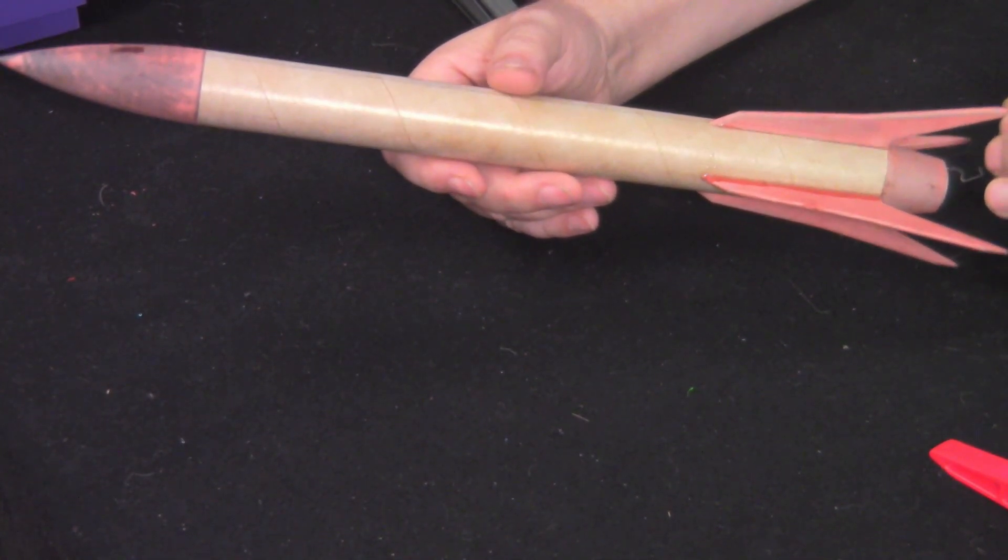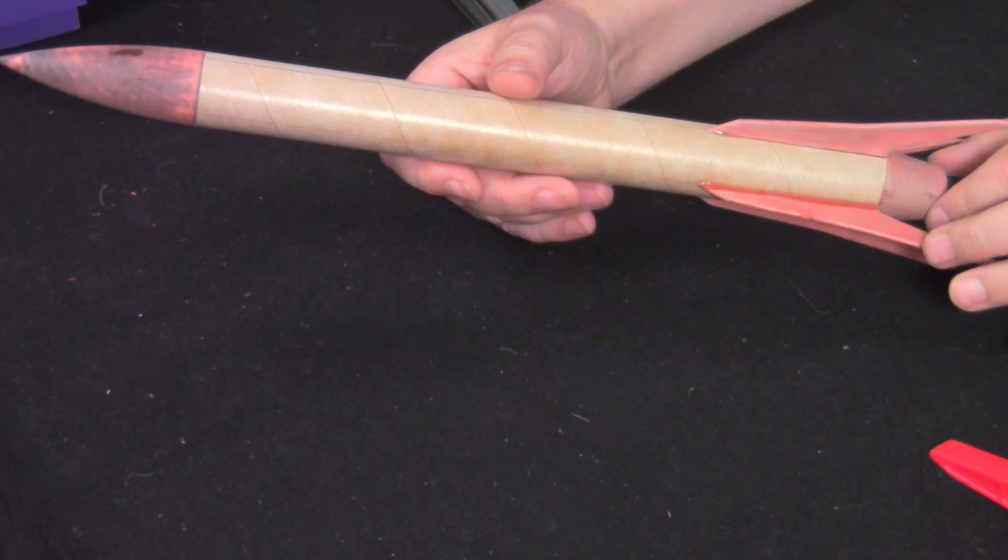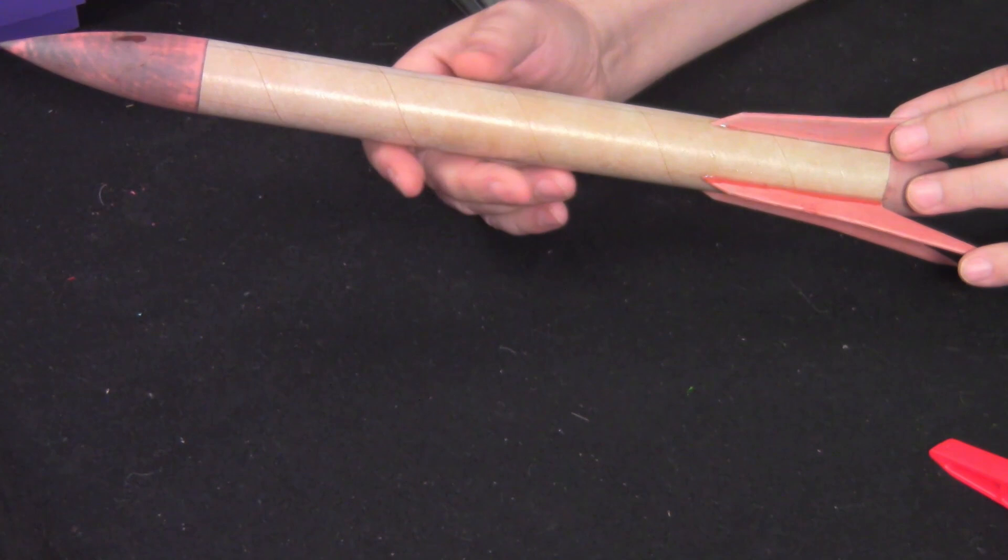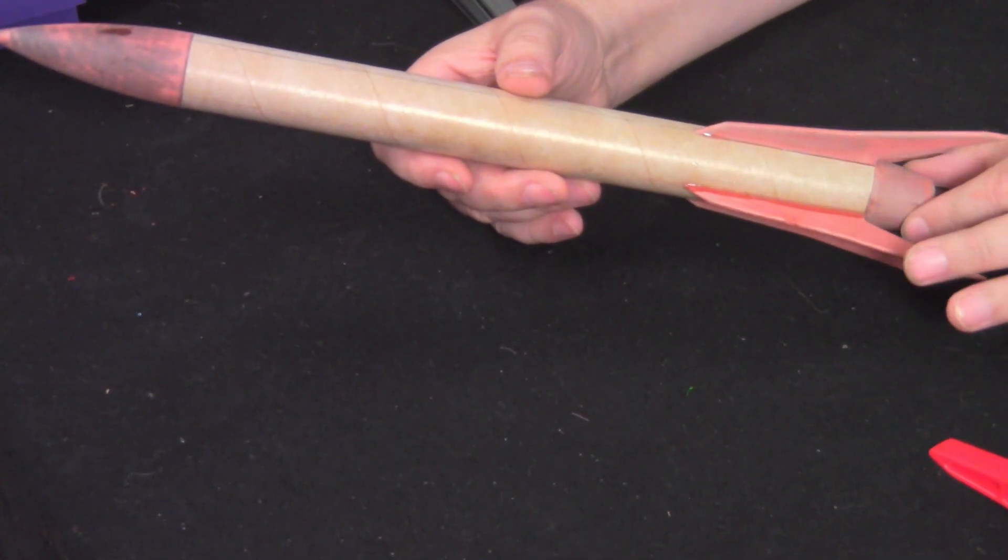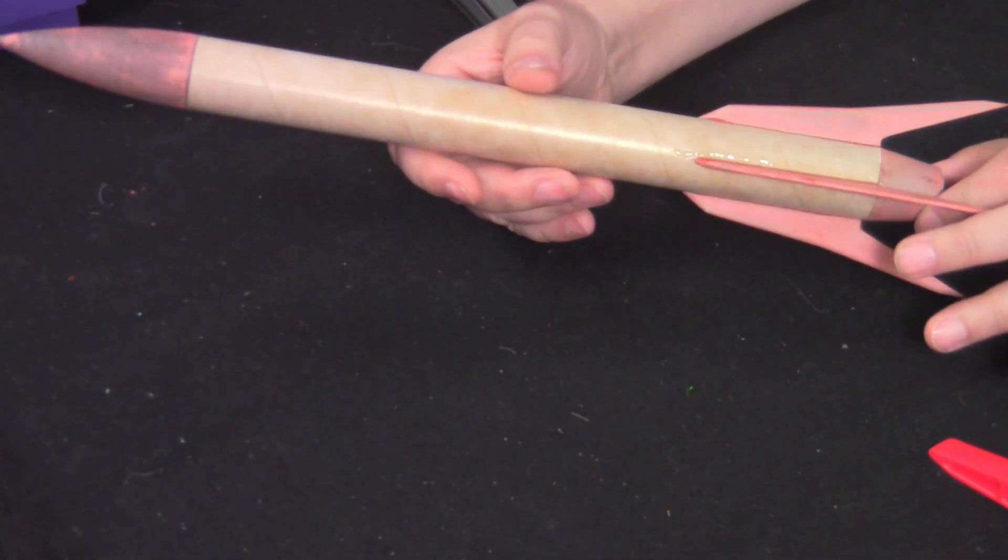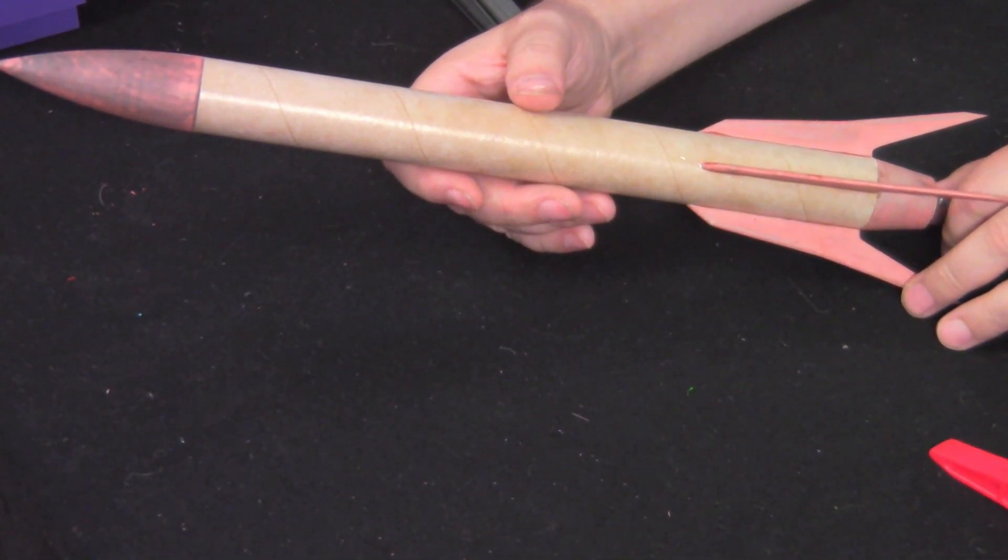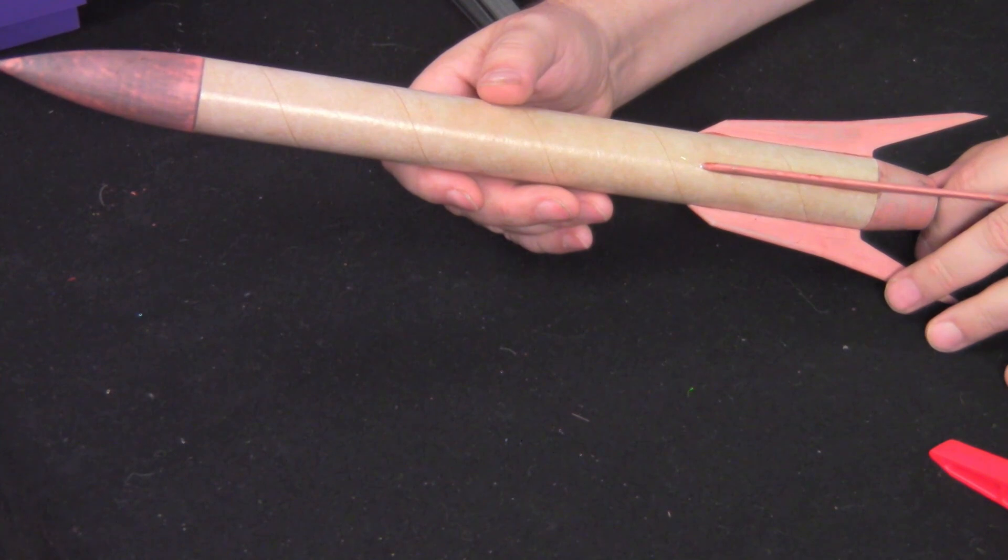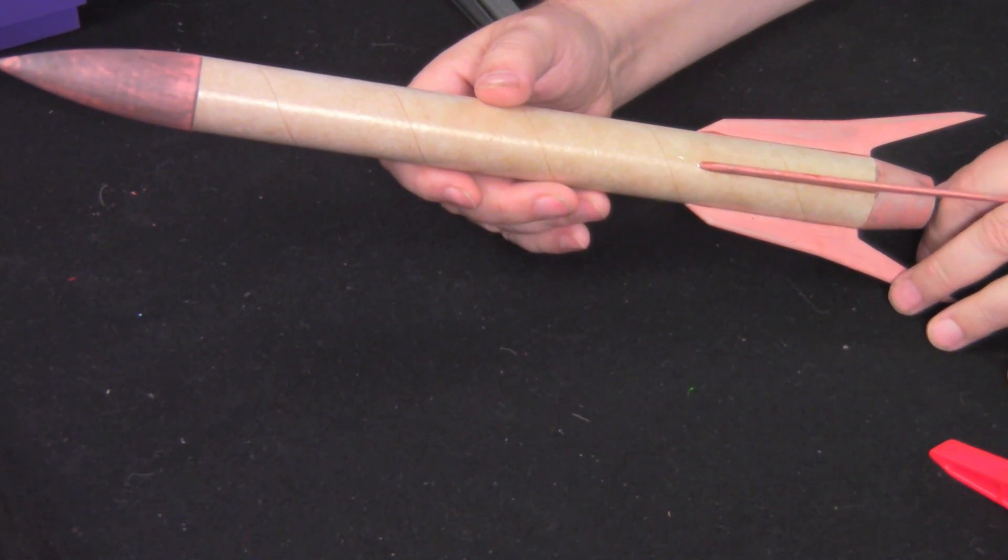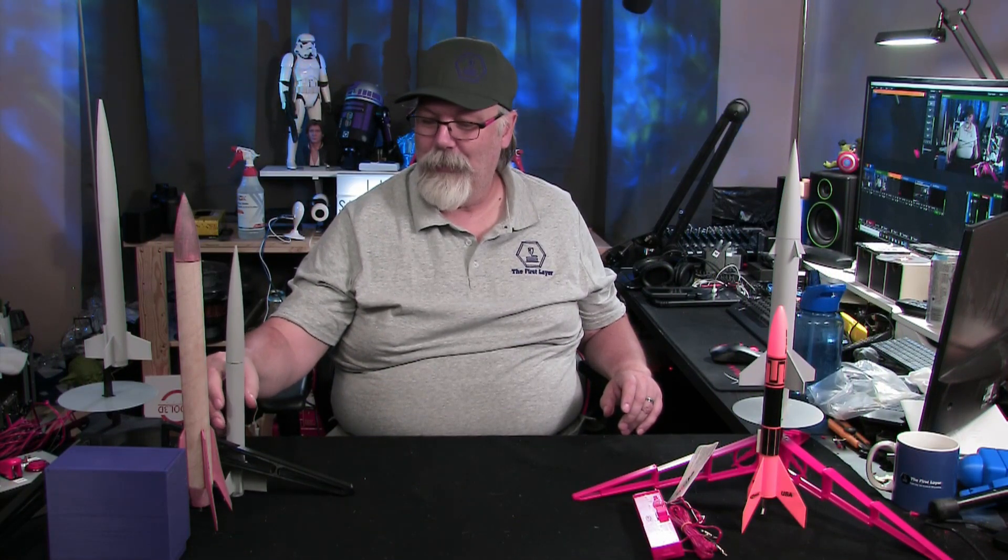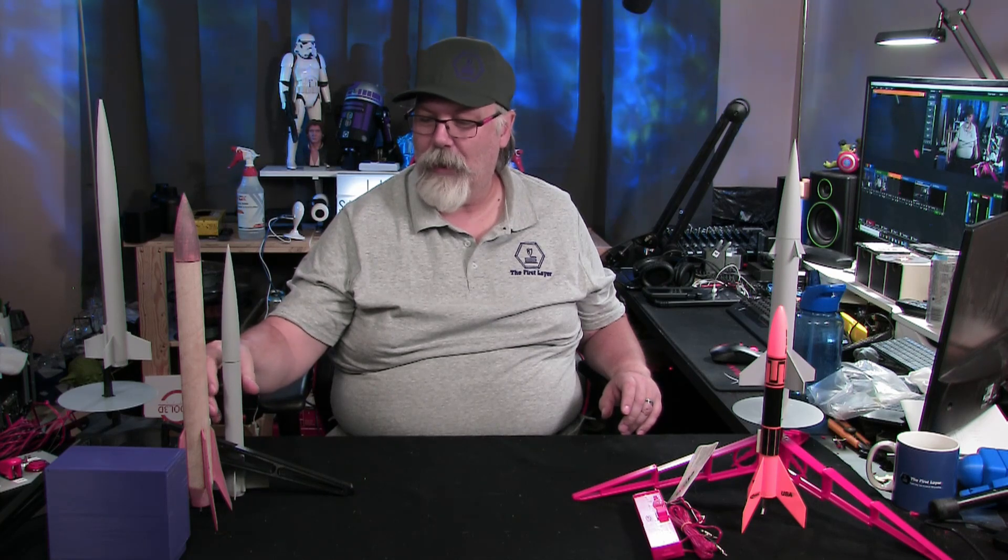All the STLs for all the stuff that I've created, including the launch control box, the fins for this particular rocket and all the parts, I will put up on thefirstlayer.com. And you'll be able to download those for free as well as I will put them up on my Thingiverse page. And I will give you links to that as well. So it's going to be an interesting time doing these rockets or setting off these rockets.